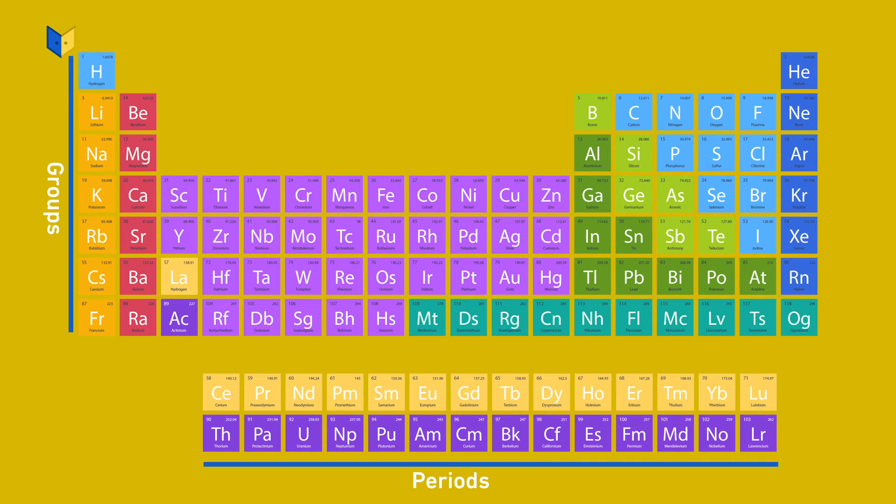So, elements are arranged in groups and periods. In total, there are eight groups and seven periods.